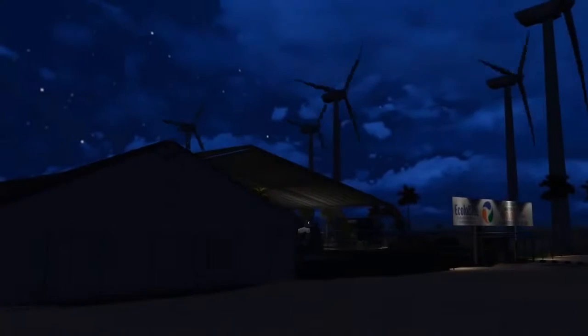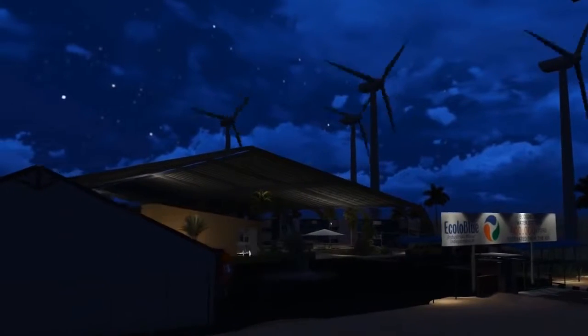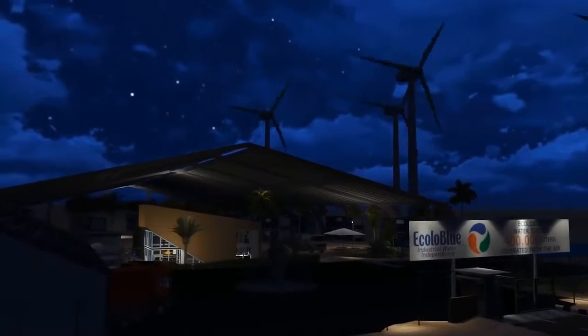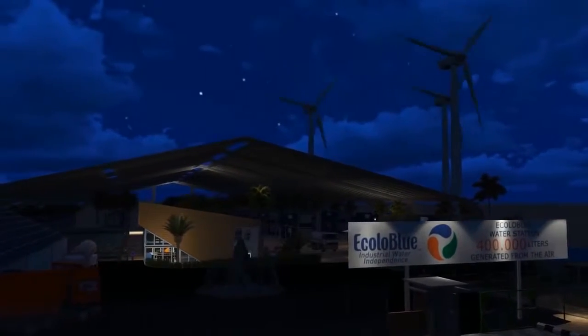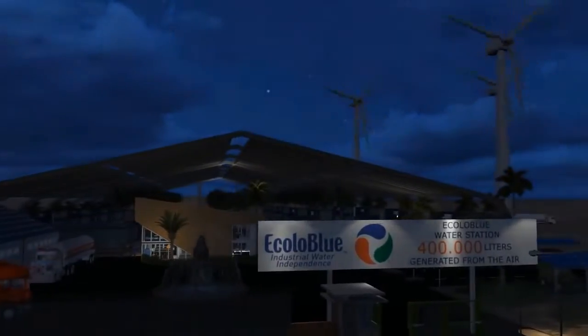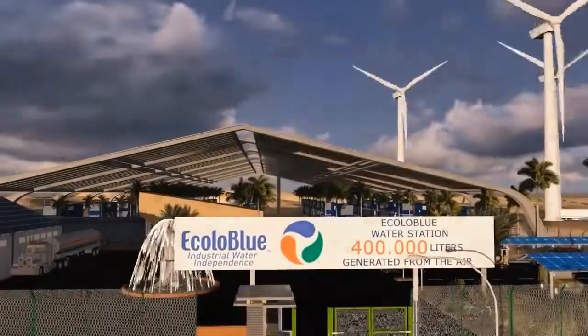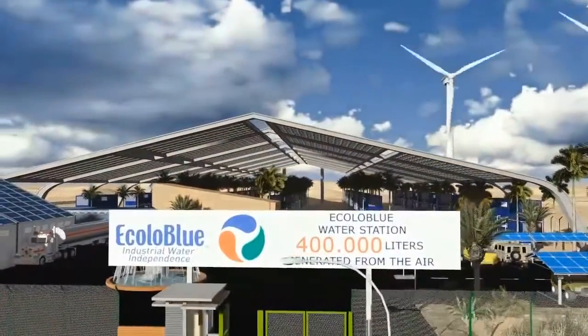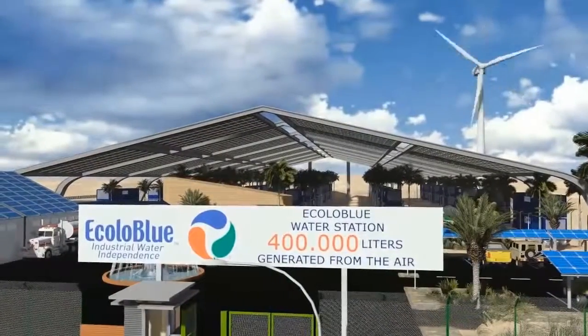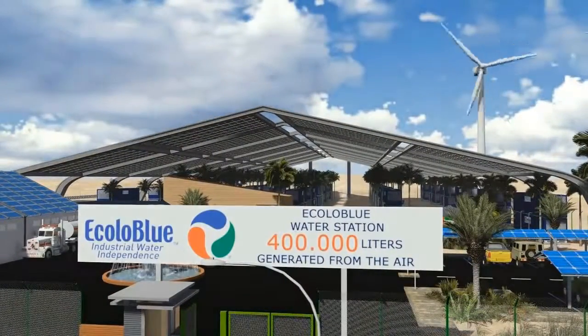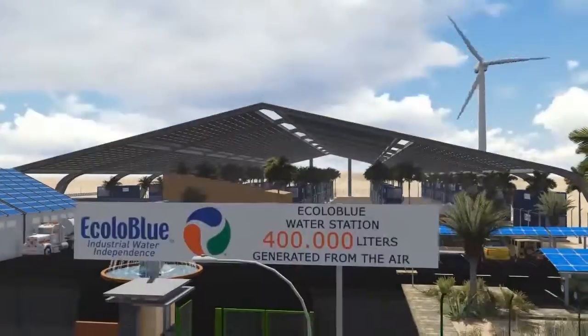Welcome to the Ecolo Blue Water Station. This water station generates 400,000 liters or 100,000 gallons of potable water every day from the humidity in the air. This is the first atmospheric water station in the world. Let's get started with the features and specifications of this unique water station.